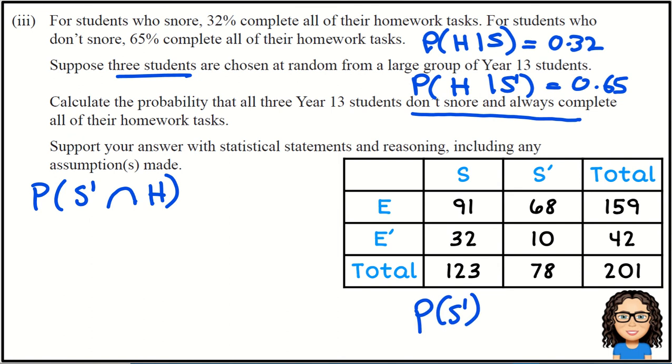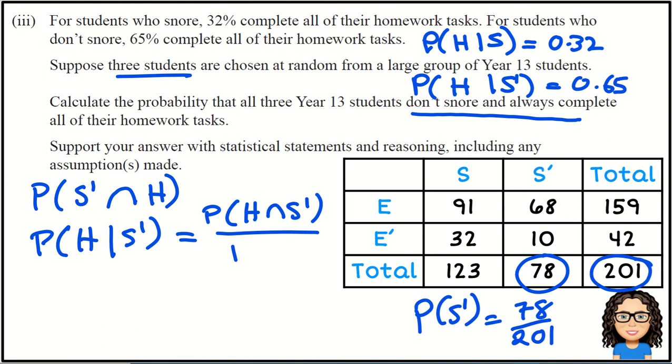Now there's a formula that's on your formula sheet that can help us here, and it says the conditional probability. So in this case it'll be the conditional probability of—not snoring—sorry, not that way around, the other way around—probability of homework given not snoring. So homework given not snoring is equal to the probability, and when we're talking about the intersection, it's okay whichever way around they go, so it's that divided by the probability of not snoring.